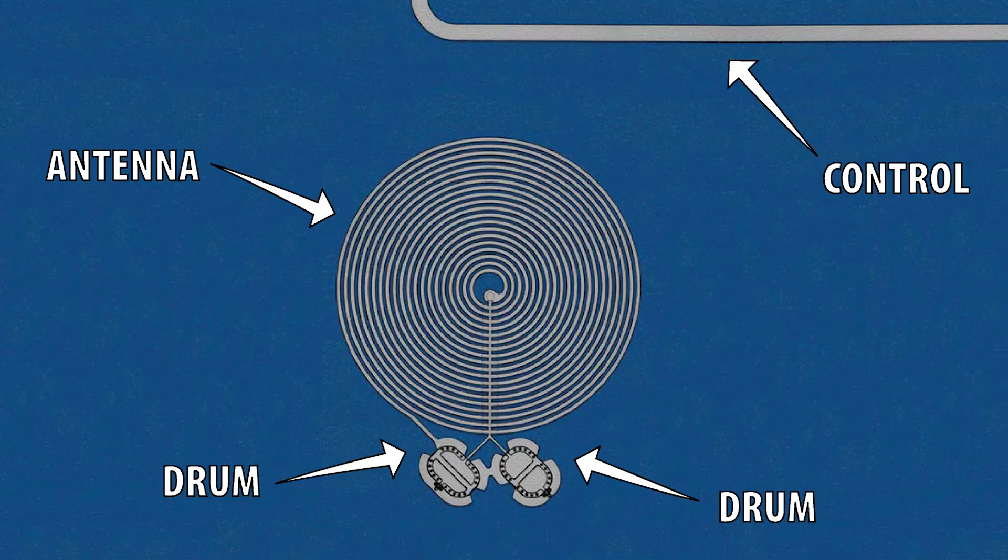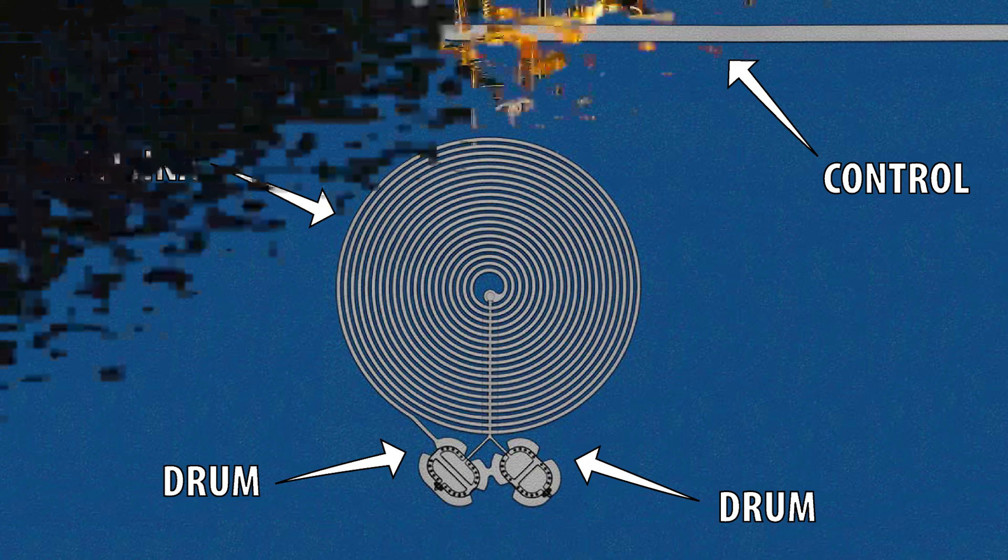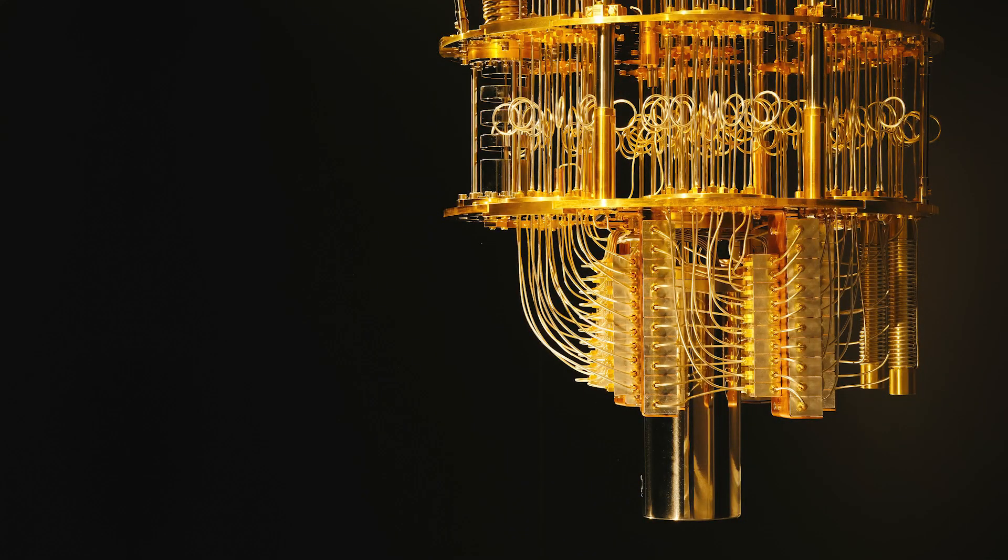In order to entangle the drums, first they need to cool the drums down to extremely cold temperatures. The drums were already quite cold, as the measurements were performed in a dilution fridge, which has a temperature of around 7 mK.